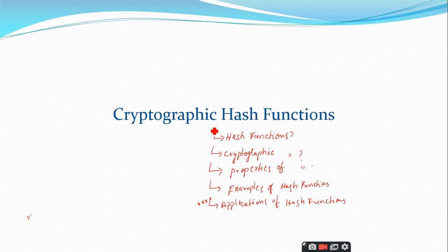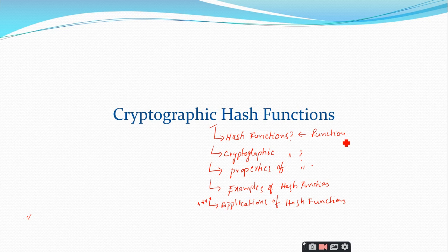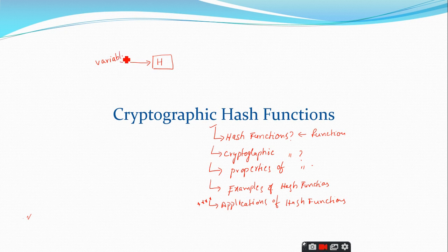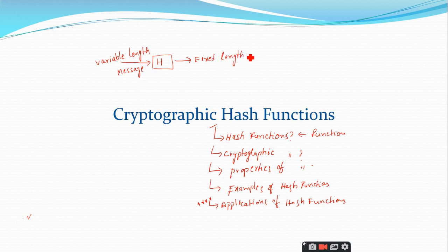Coming to the basic definition of a hash function: a hash function is nothing but a function which maps a variable length message into a fixed length hash value. If you take a hash function — assume this is a box where you are implementing the hash function — it takes a variable length message as input and the output will be a fixed length value, which we call the hash value.